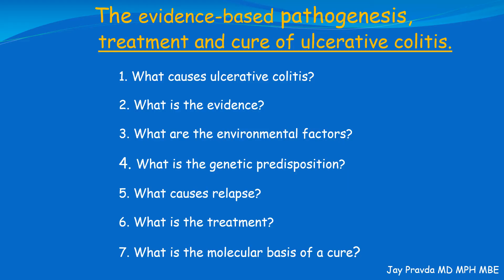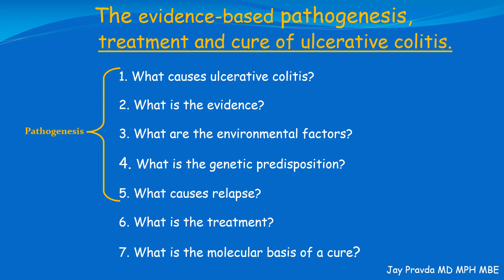In other words, what needs to be done to cure this disease, and how can we do this? Numbers one to five constitute the elements of the pathogenesis, or how ulcerative colitis develops. Number six discusses the most effective treatment based on the evidence. And number seven provides the molecular basis and therapeutic goals for effectuating a cure. The next slide will answer the question, what exactly is ulcerative colitis?